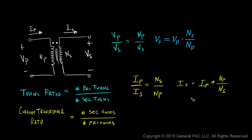If we were to design a current transformer, we would want a small secondary current — that's the whole purpose of a current transformer. To have a small secondary current means we either need very few primary turns or a very large number of secondary turns.